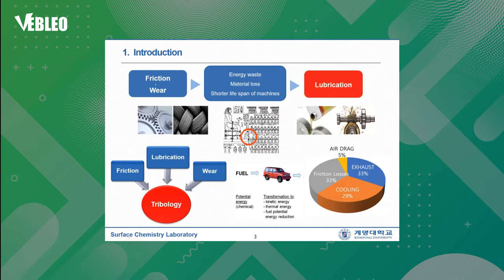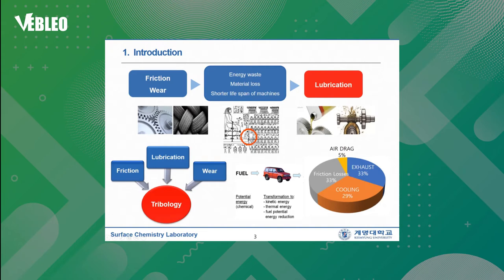Friction and wear are very frequent phenomena in our daily life. Friction and wear produce energy waste, material loss, and shorter lifespan of machines. So we need lubrication in order to reduce friction and wear in operating machinery. By one report, one-third of automobile fuel energy is used to overcome friction during driving. The old Egyptians also sprayed lubricating oil in the moving route of huge statues, which explains the long history of lubrication in human history.